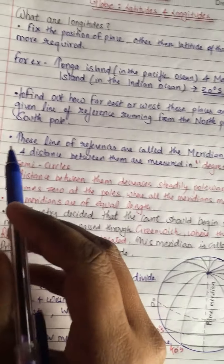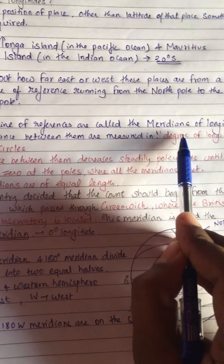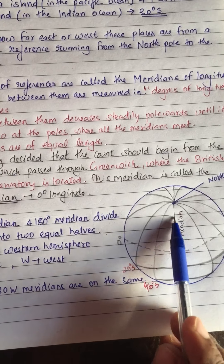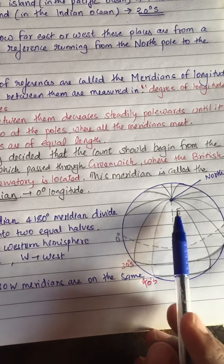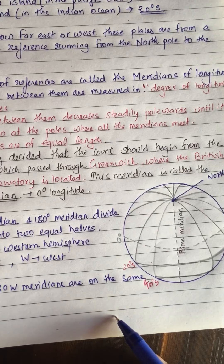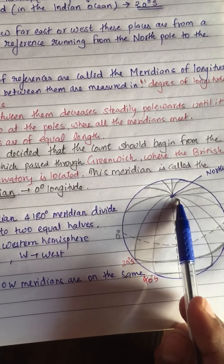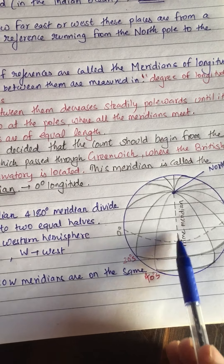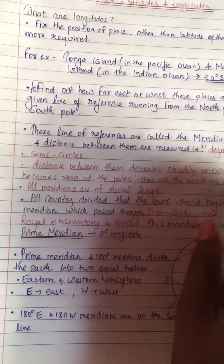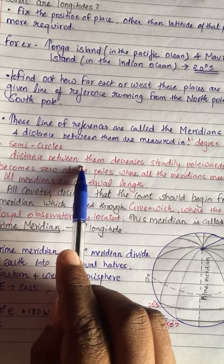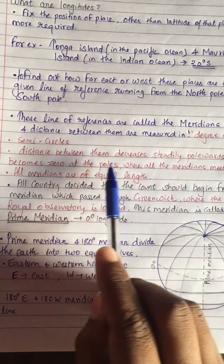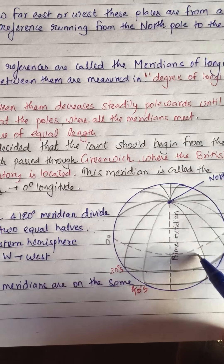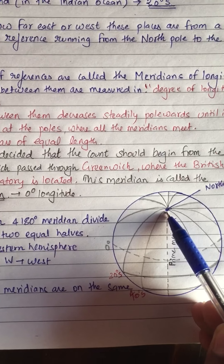This line of reference is known as the meridians of longitude. Looking at the diagram, this meridian joins the north pole and the south pole on both sides. All the meridians are of equal length and they meet at the poles. So the distance between the meridians of longitude becomes zero as they move towards the pole — as stated in the book: the distance between them decreases steadily polewards and becomes zero at the poles where all the meridians meet.